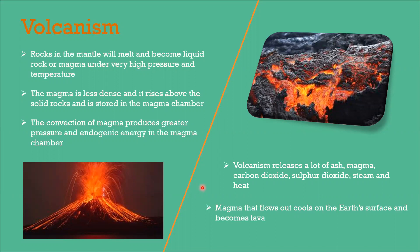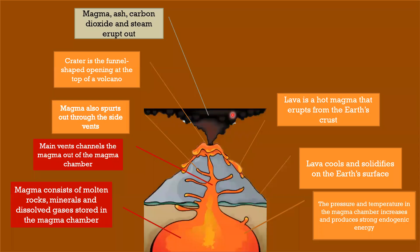Here's a diagram of volcanism. This is the crater that opens at the top of the volcano — it spills magma, ash, carbon dioxide, and steam through it. The magma also spurts out through the side vent. The main vent channels the magma from the magma chamber, which contains molten rocks, minerals, and dissolved gas. Lava is the hot magma that erupts from the Earth's crust, and you can see it right here.